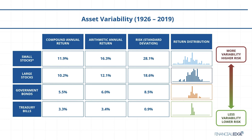Less risky assets such as bonds have narrow skylines indicating less variable returns. Government bonds and treasury bills are guaranteed by the full faith and credit of the US government as to the timely payment of principal and interest, while stocks are not guaranteed and have been more volatile than the other asset classes. Furthermore, small stocks are more volatile than large stocks, are subject to significant price fluctuations and business risks, and are thinly traded.